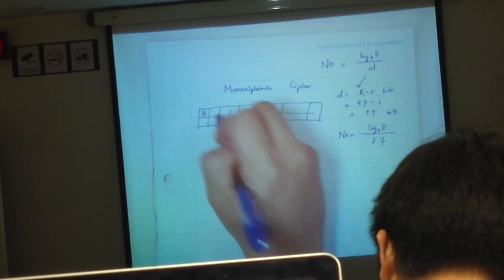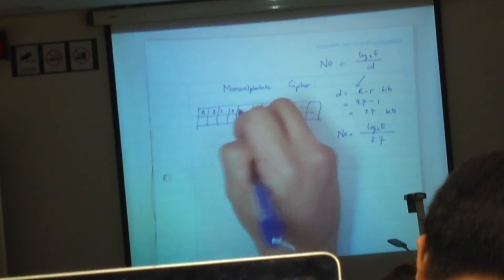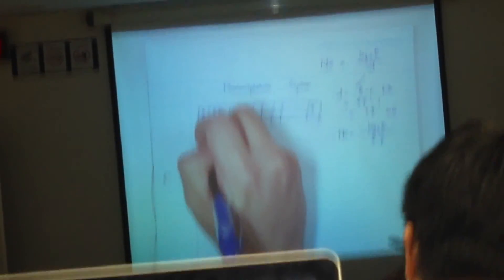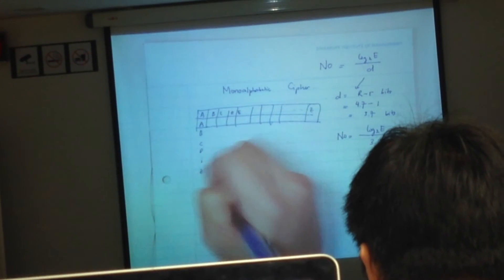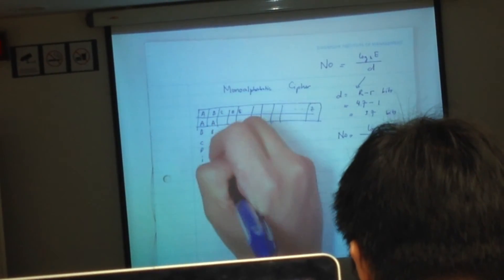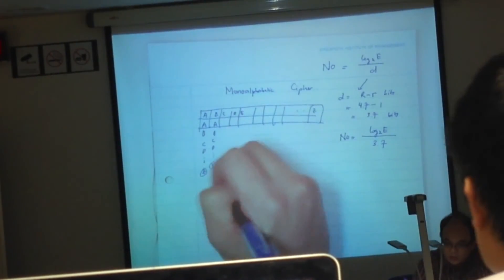This is A, B, C, D, E up to Z. For A, you can have A, B, C, D up to Z. For B, you can have A, B, C, D up to Y, because one is already selected, and so on.